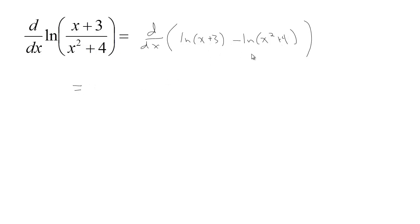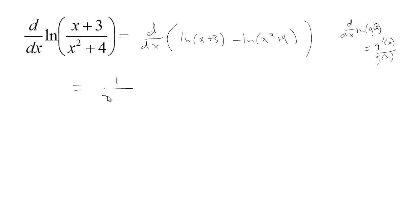Remember that if you need to take the derivative of the natural log of a function, you just get the derivative of the inside over the inside. When I take the derivative, I just get the derivative of the inside. The derivative of x plus 3 is 1, so the derivative of the inside over the inside is that. The derivative of this inside is 2x, so if I take the derivative of the natural log of x squared plus 4, I get the derivative of the inside over the inside, and I'm done.